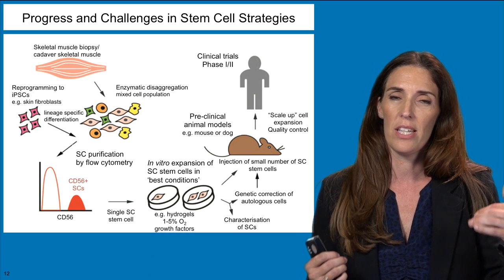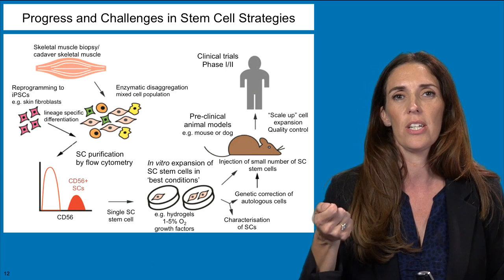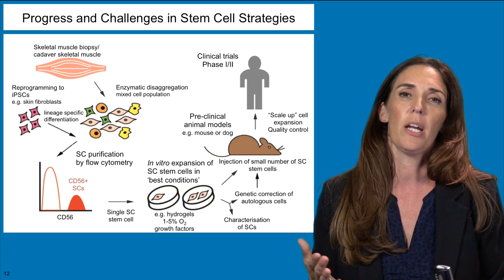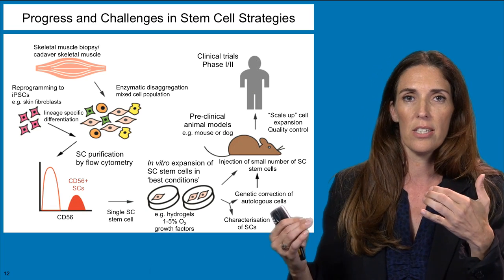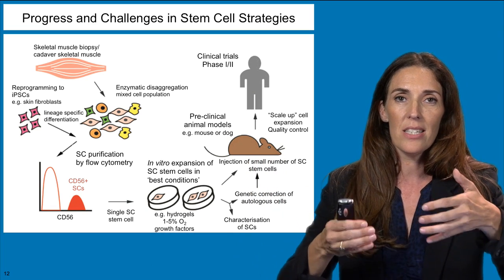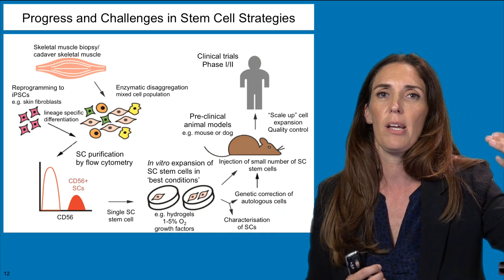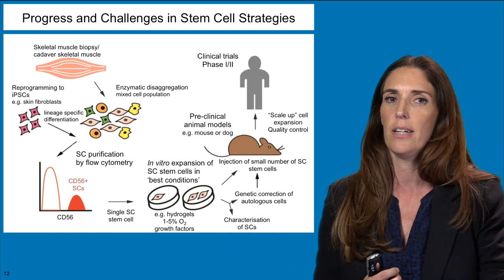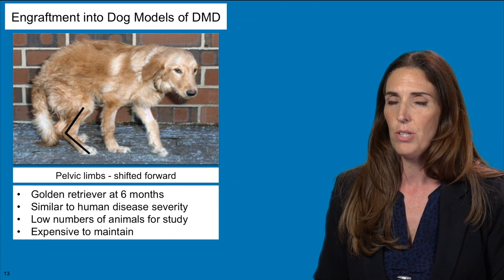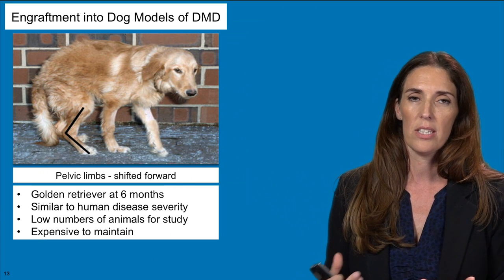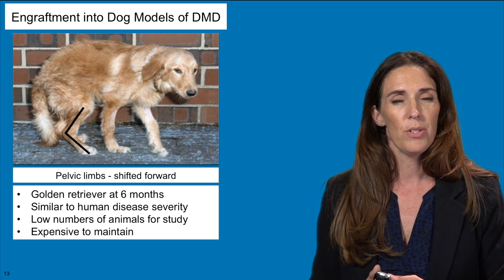Once you have your stem cell of interest, how do you know it can function the way you want in animal models that will benefit patients with DMD? You have to first purify, characterize, and functionally test these cells, then think about testing them in animal models of the disease. There are a number of different challenges in using stem cells in regenerative medicine in the context of DMD, and one is thinking about which is the right model to test your stem cell.